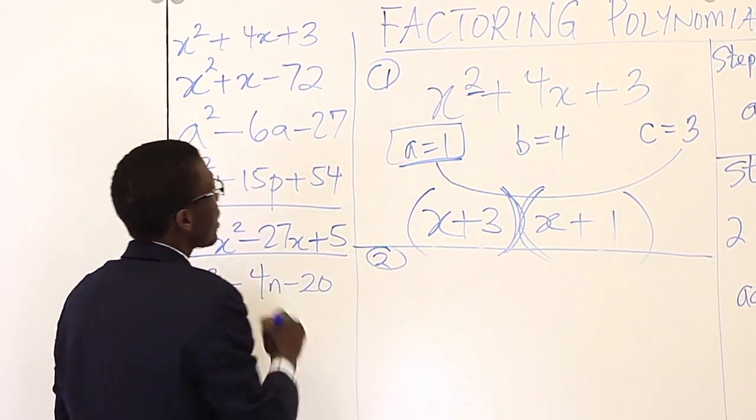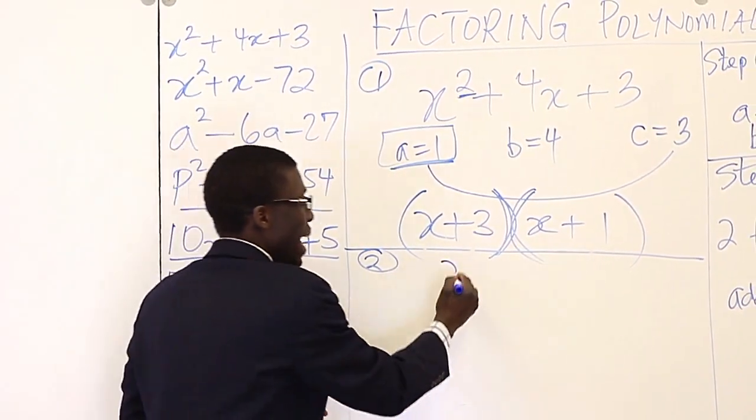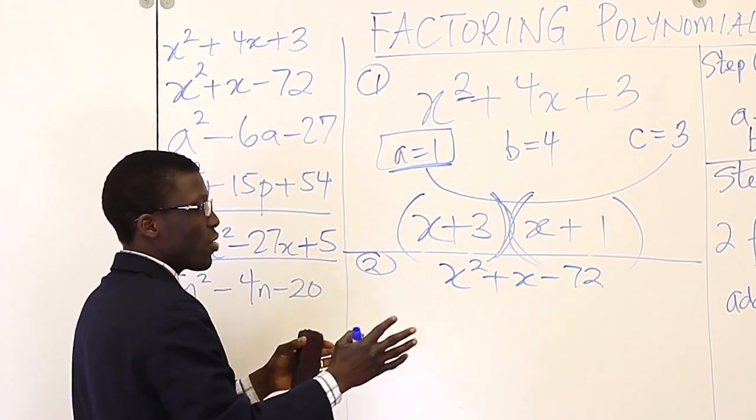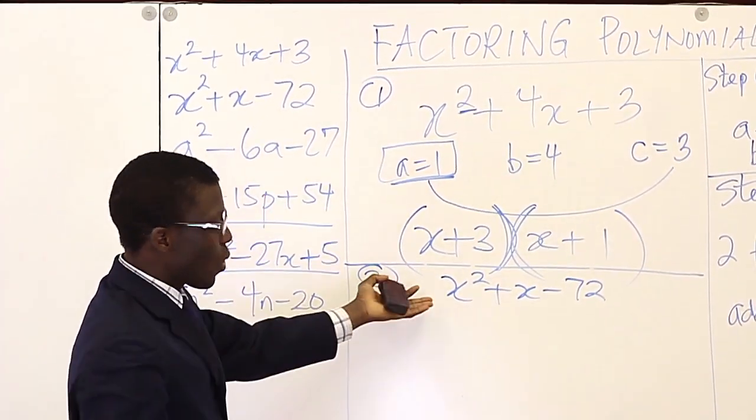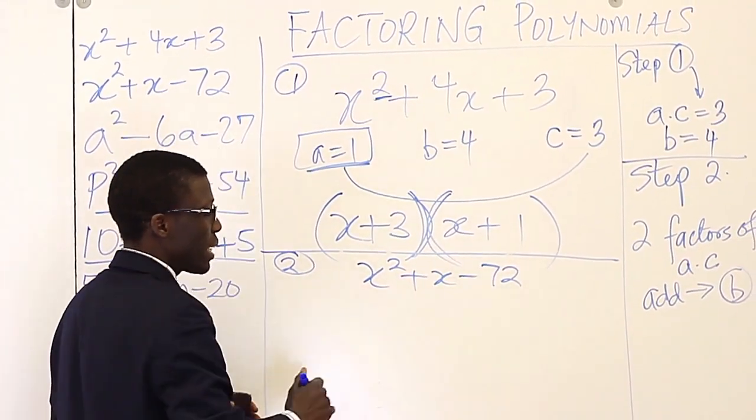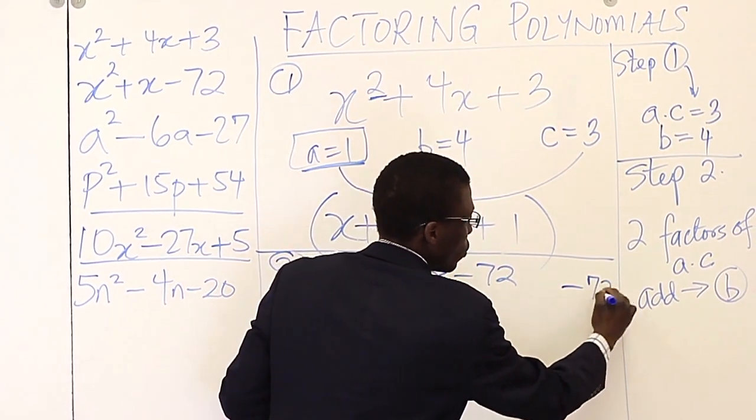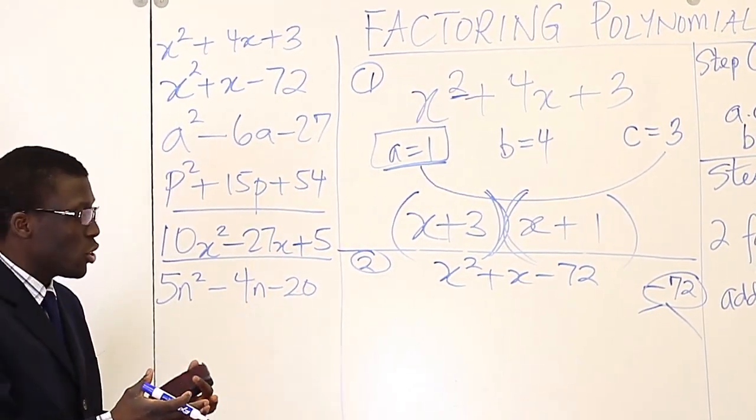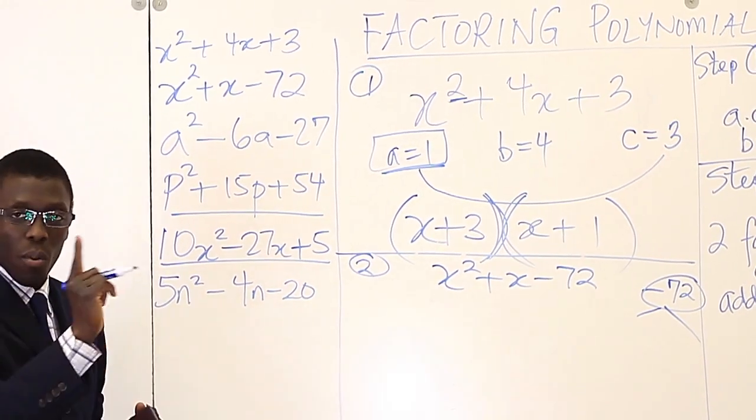Now let's look at the second example. x squared plus x minus 72. So remember the steps. Step 1. Well, first, you know that a is 1 in this case, too. But you go ahead and multiply. What's 1 times negative 72? It's negative 72.